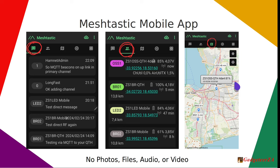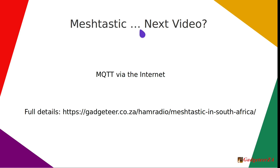Just to note: Meshtastic is not a replacement for WhatsApp, Telegram, or Signal. It doesn't support photos, files, audio, or video. The reason is that it's very lightweight radio communication — a photo or audio file could be megabytes, tying up the entire radio network. It's really intended for off-grid text messaging on public or private channels.